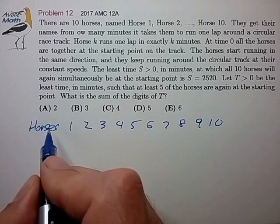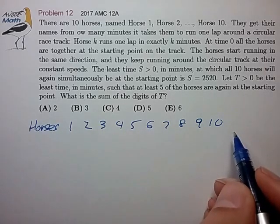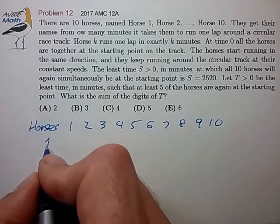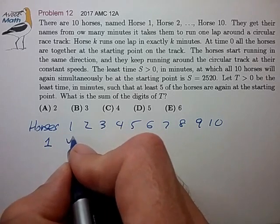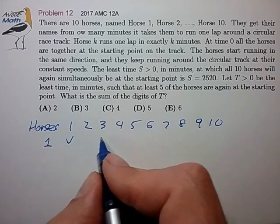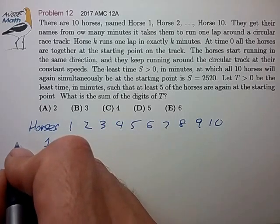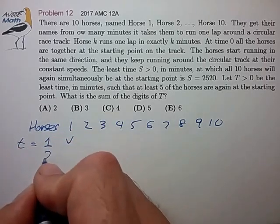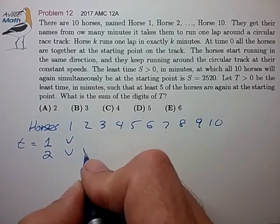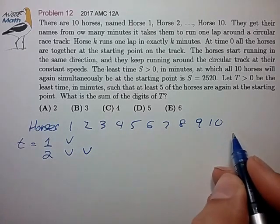And at time zero, they're all at the starting line, so that makes sense. And at time of one minute, he's back at the starting line, but none of the others are. At time two minutes, they're both at the starting line, but none of the others.